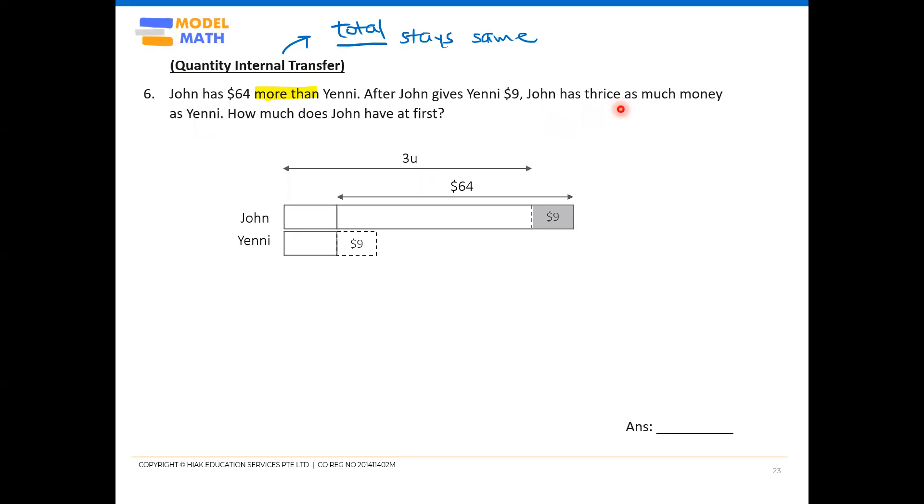Now what about Yenny? If John has three units, of course, from this sentence, I know Yenny must have 1U. Now where is her new 1U? Is it just this one or is it this whole thing? So you must remind yourself that this 3U and 1U is for in the end. In the end, whatever they have in the end. So Yenny in the end got this whole thing. So this is now your 1U. And that's it. This is what you have recorded now.